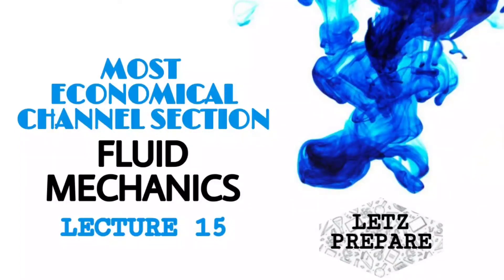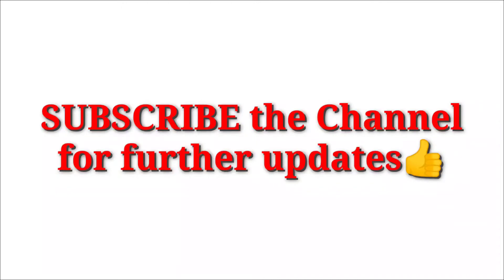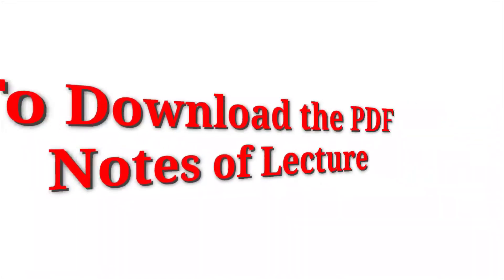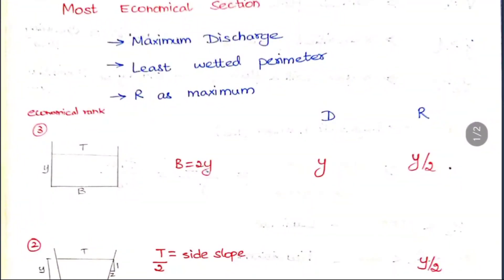Today we are going to see about the most economical section, also called the hydraulic efficient section. We go for this economical section in construction because it is helpful in construction work. The section which gives you the maximum discharge is called the hydraulic efficient section.